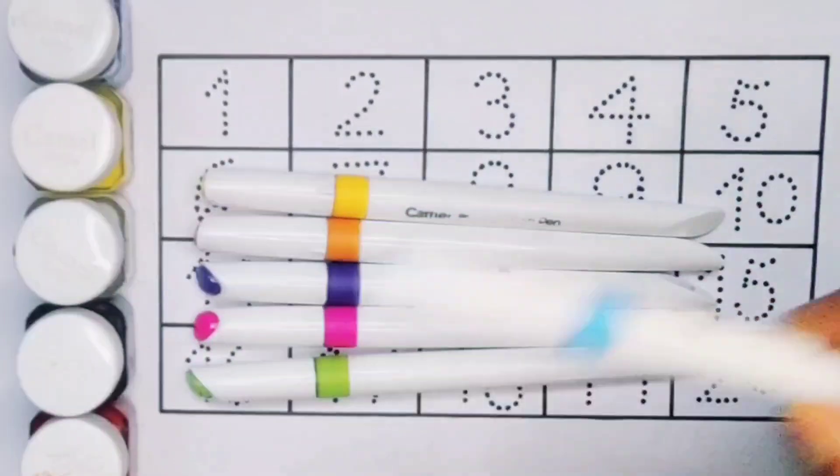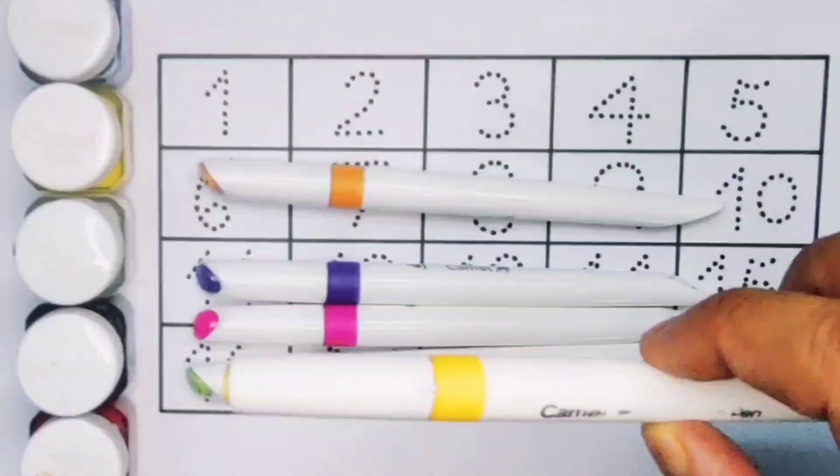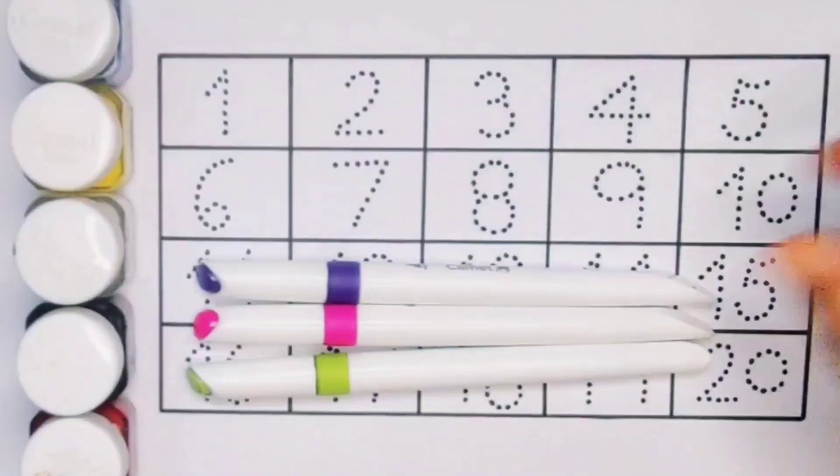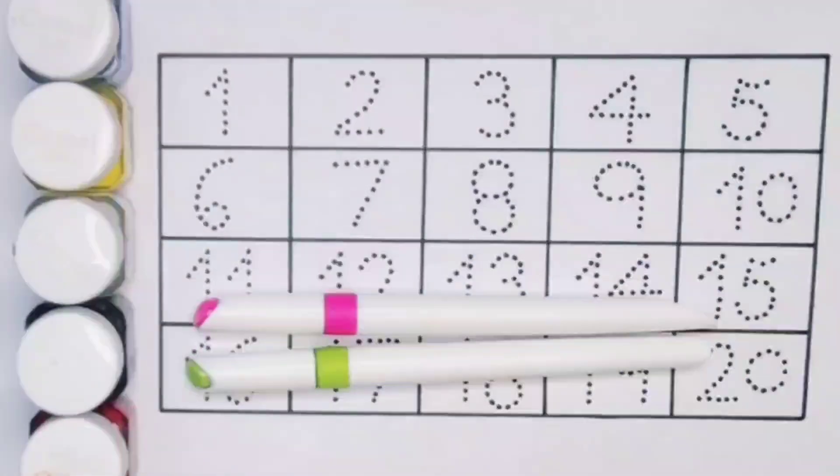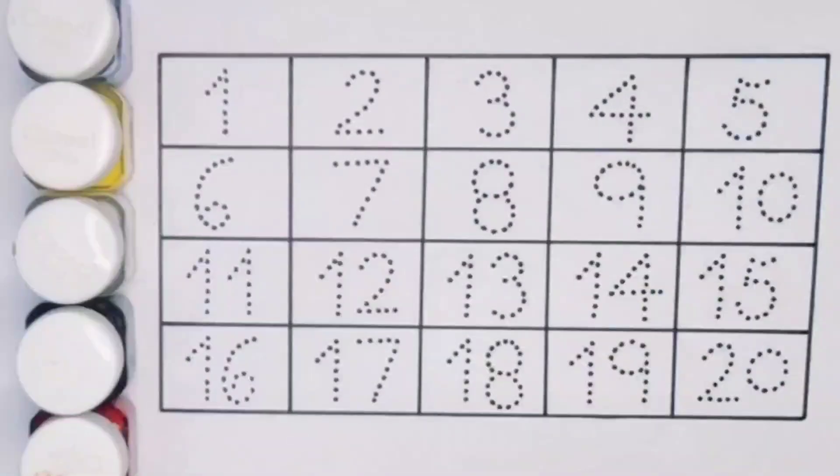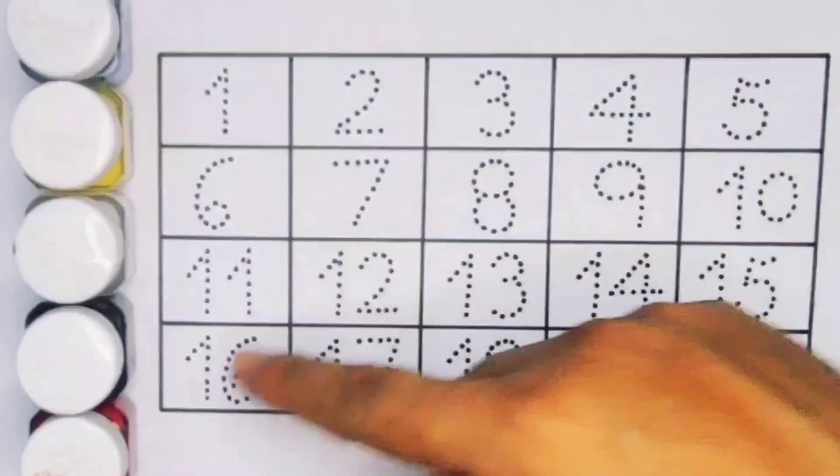Sky blue color, yellow color, brown color, purple color, pink color, and light green color. Now let's learn the numbers counting one to twenty.